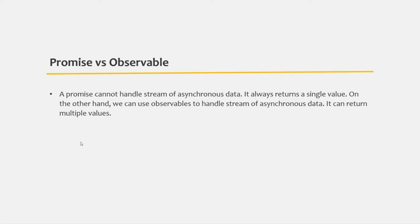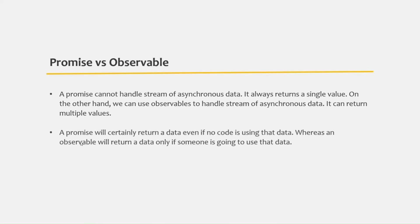With observables, we can handle a stream of data very easily — an observable can return multiple values. Another difference is that a promise will certainly return data even if there is no code using that data. But in case of an observable, it will only provide data if there is someone to use it. If there is no code using that data, the observable will not send it. This is an important point to remember about observables.